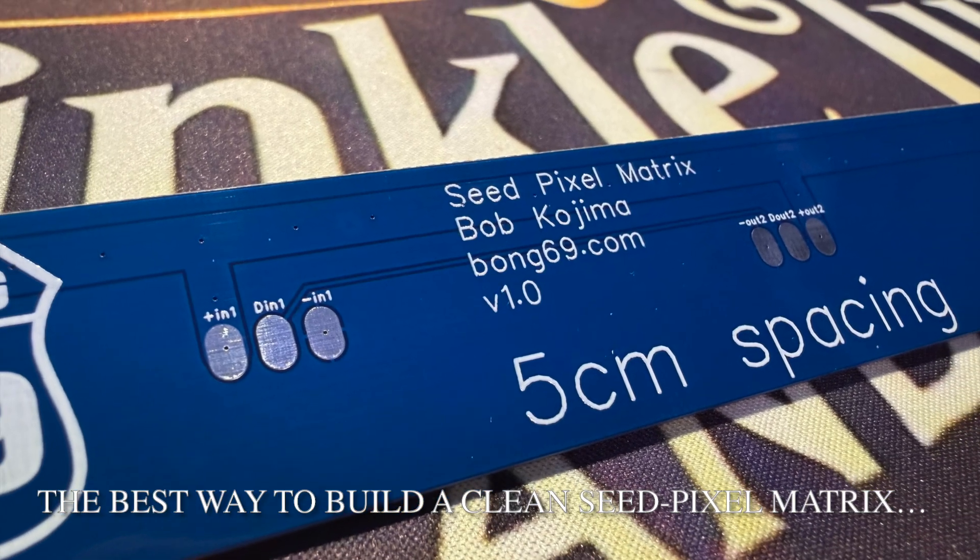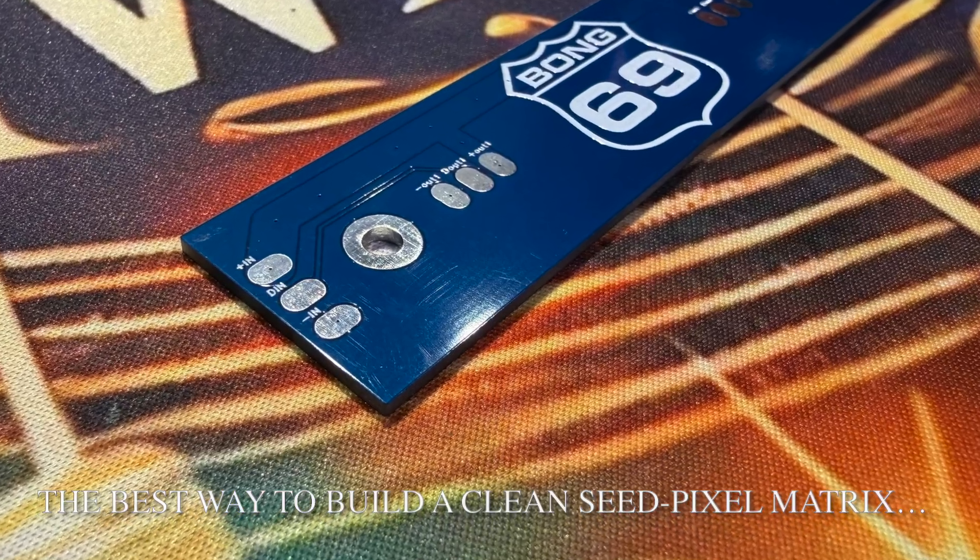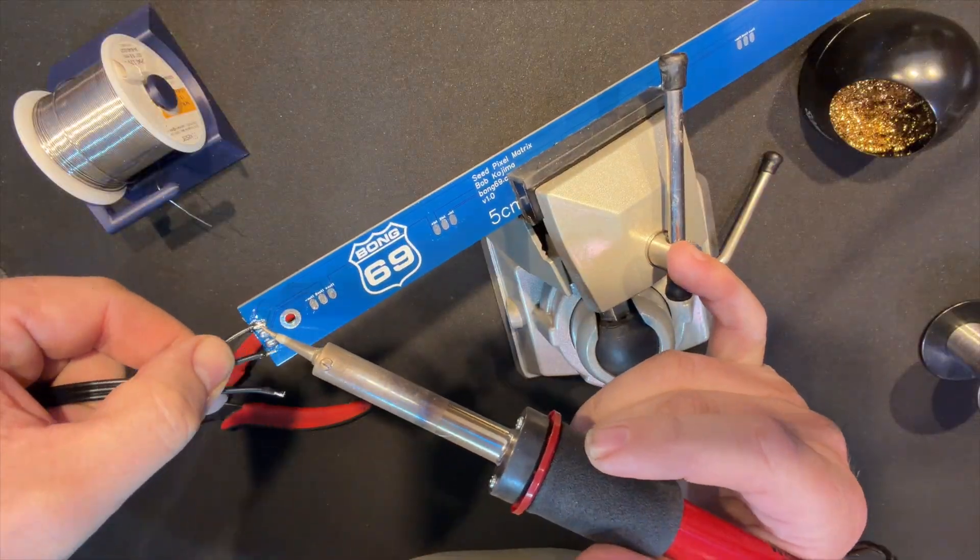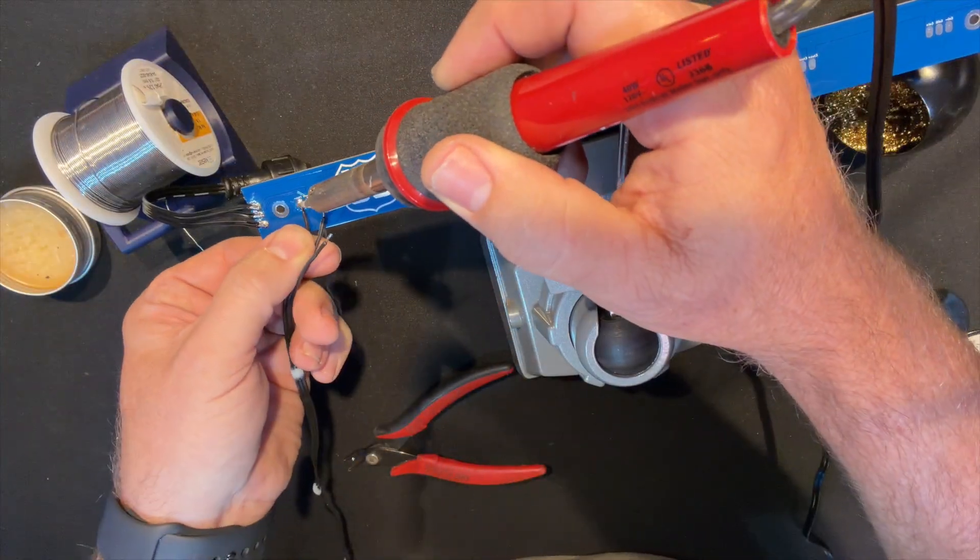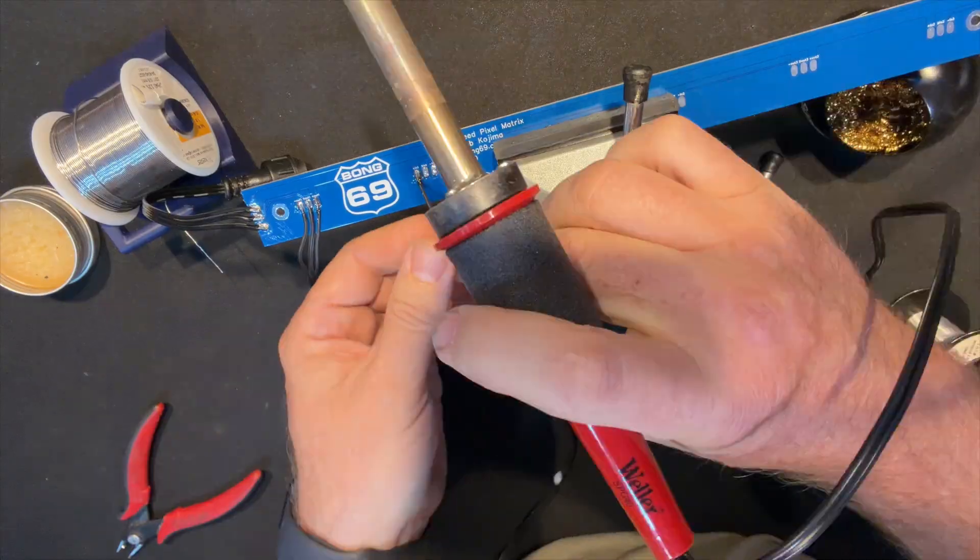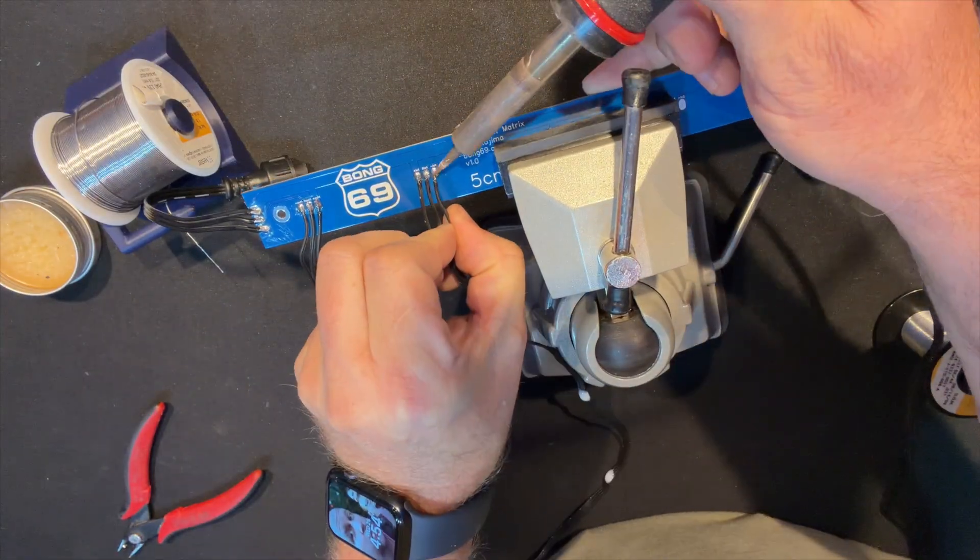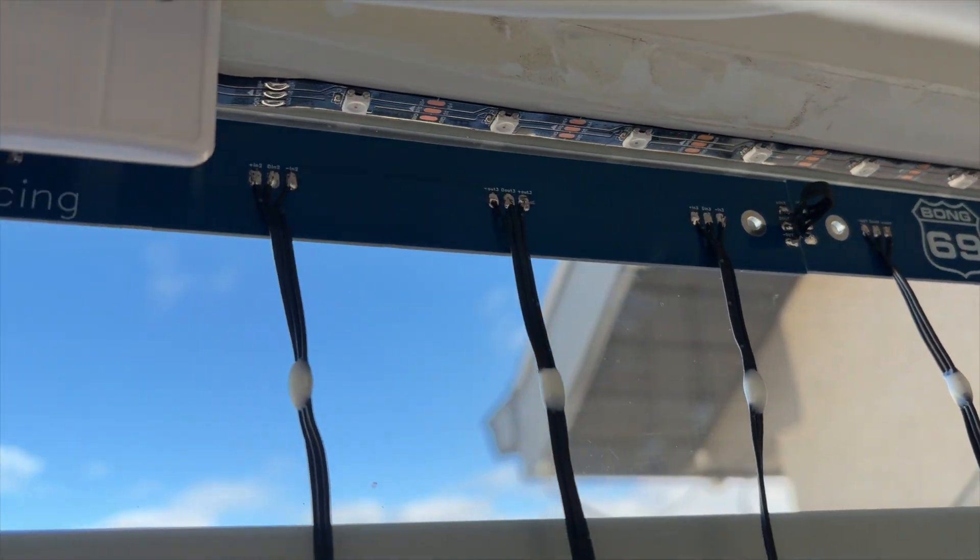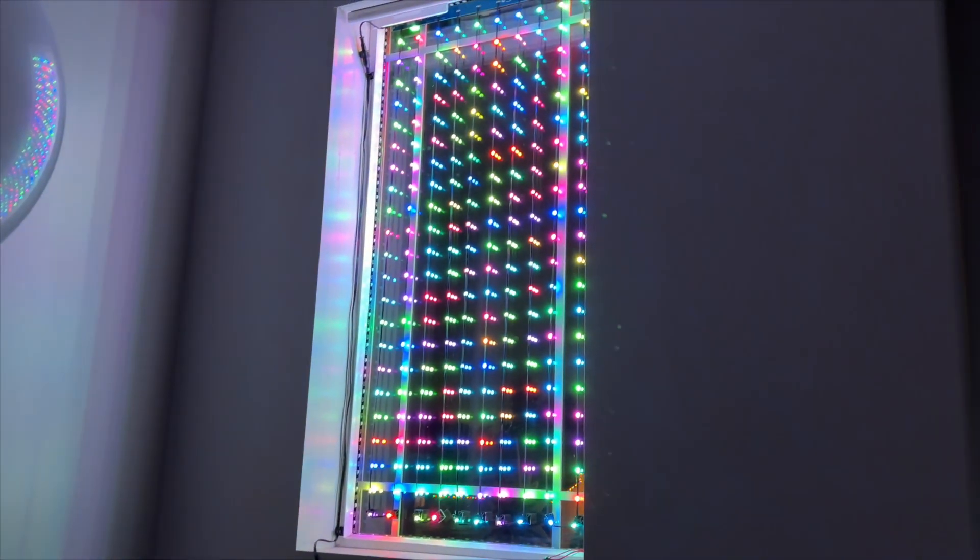If you've struggled to build a clean seed pixel matrix without sagging wires, power issues, or uneven spacing, this little PCB from Bong69 might be the best solution I've ever tried. Let me show you how I built this prototype from start to finish.